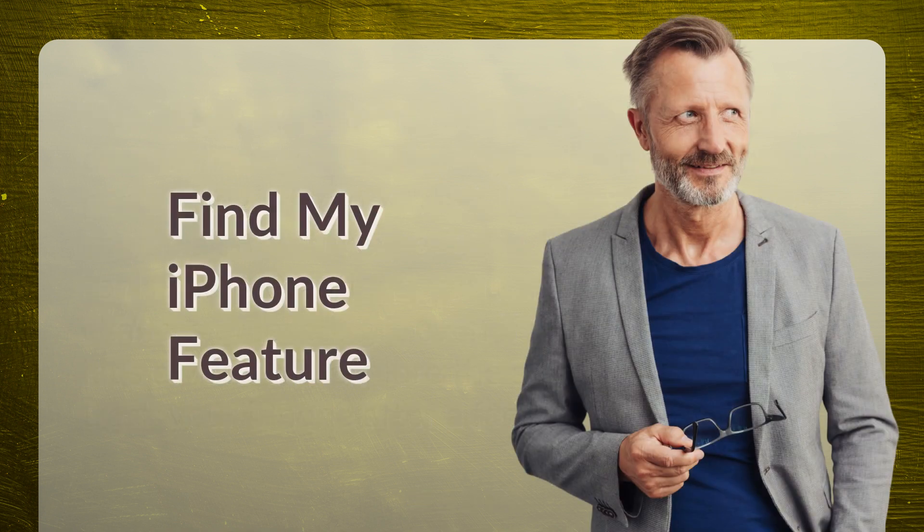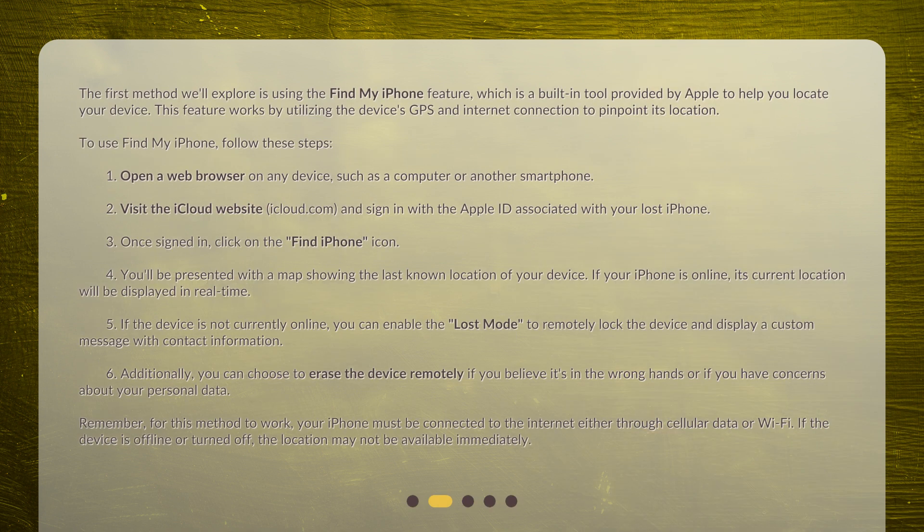The first method we'll explore is using the Find My iPhone feature, which is a built-in tool provided by Apple to help you locate your device. This feature works by utilizing the device's GPS and internet connection to pinpoint its location. To use Find My iPhone, follow these steps.